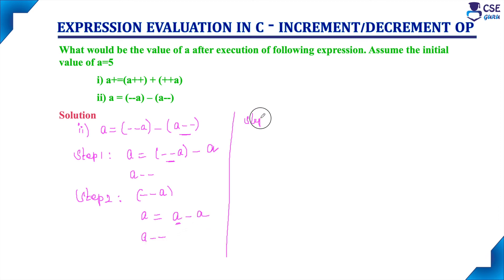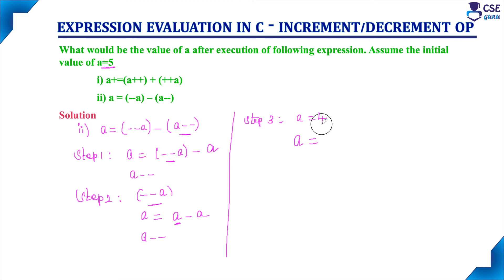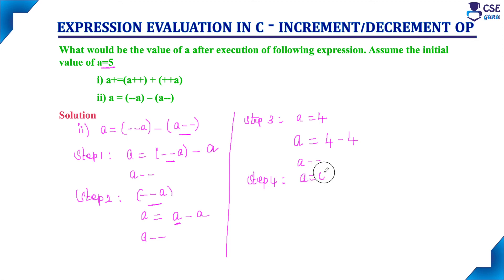Step 3: the value of A gets decremented by 1. The given value of A is 5, so after decrementing, A becomes 4. For the post-decrement, the value 4 in the memory location of A is used first. So here A is 4 and the other A reference is also 4. Then we decrement the variable value by 1. Step 4: A value is 4, so the statement executes as A equal to 4 minus 4, giving A equal to 0.